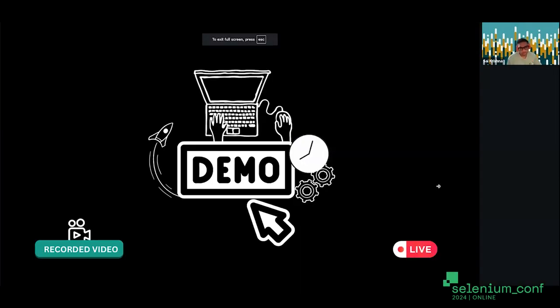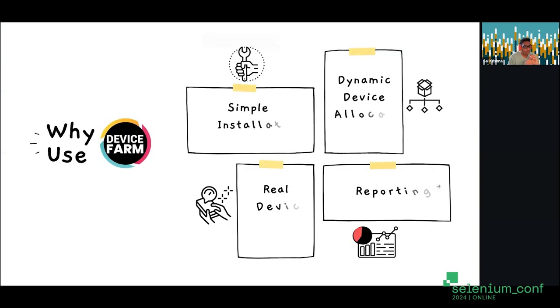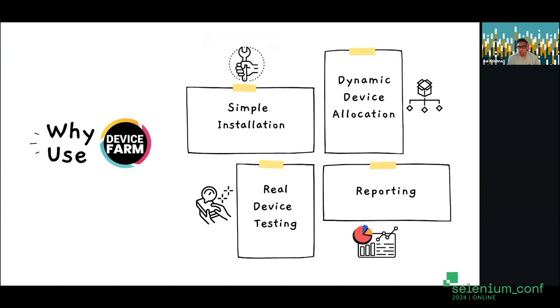Now that we've seen everything, let's recap why device farm is useful. It's simple installation — just a plugin, activate it, no fancy third-party dependencies or SDKs to bundle. It offers dynamic device allocation, as demonstrated by plugging and unplugging devices and seeing things update in real time. Real device testing is available right in the browser. Reporting is extensive: device logs, screen grabs, and more. If you feel something is missing, please raise an issue — we'll look at it and try to support it.